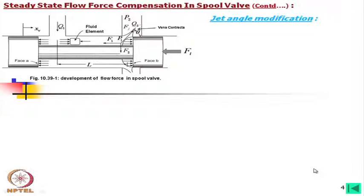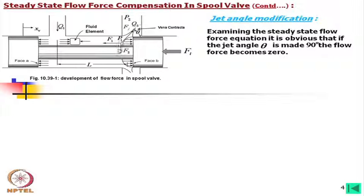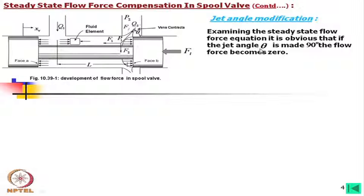One method is jet angle modification. If we can make the jet angle θ equal to 90 degrees — meaning the flow goes straight in the upward direction — there will be no axial component. The lateral force F2 is uniformly distributed around the circumference and cancels out, so making θ = 90° would make the flow force zero.